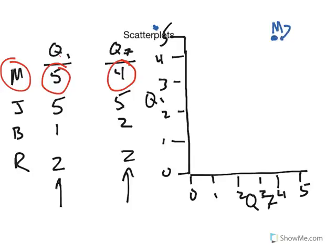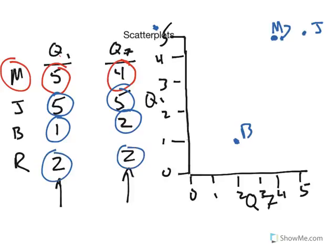Let's do Johnny. Johnny got a 5 and 5, right there. Bobby got a 1 and a 2. So there's right here. And then there's a 2 and a 2. And that's basically how you make a scatterplot. It's really simple and pretty useful when you have a huge amount of data.